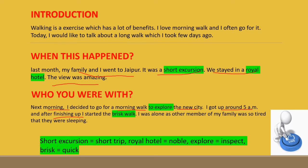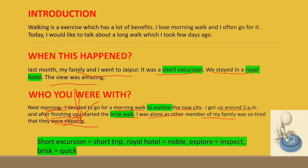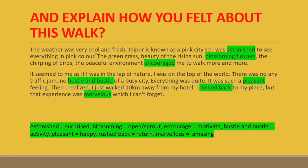After freshening up, I started a brisk walk. I was alone as the other members of my family were so tired that they were still sleeping. The weather was very cool and fresh. Jaipur is known as the Pink City, so I was astonished to see everything in a pink color. The green grass, the beauty of the rising sun, blossoming flowers, and the chirping of birds — the peaceful environment encouraged me to walk more and more. It felt as if I was in the lap of nature. I was on top of the world. There was no traffic jam, no hustle and bustle of the busy city — everything was quiet. It was such a pleasant feeling. Then I realized I had walked 10 kilometers away from my hotel.